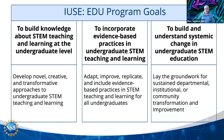The last program goal is to build and understand systemic change in undergraduate STEM education. This is really work that happens at an institutional level. Institutions can be slow to adapt to advances in teaching and learning, so we hope that efforts supported by the IUSE program can help lay the groundwork for sustained departmental, institutional, or community transformation and improvement in the service of improving STEM teaching and learning.